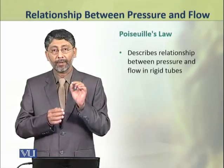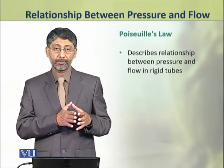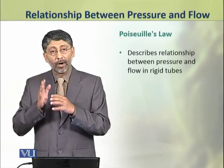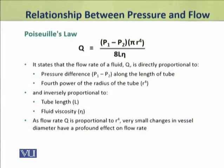Dear students, the relationship between pressure and flow in rigid tubes is described by Poiseuille's law. It states that the flow rate Q is directly proportional to the pressure difference along the length of the tube, and also directly proportional to the fourth power of the radius of the tube. The flow rate is inversely proportional to two factors: tube length and fluid viscosity, eta.